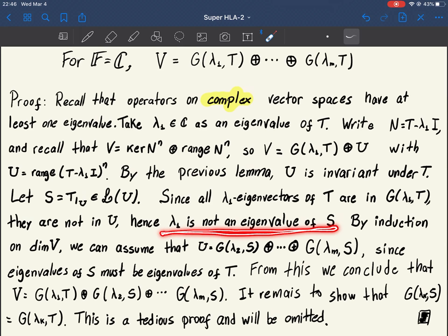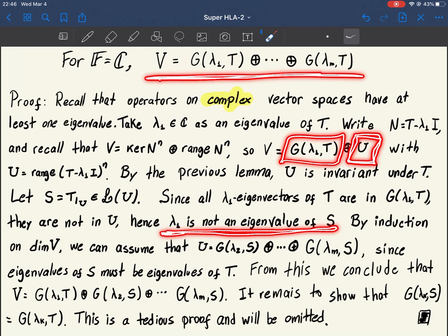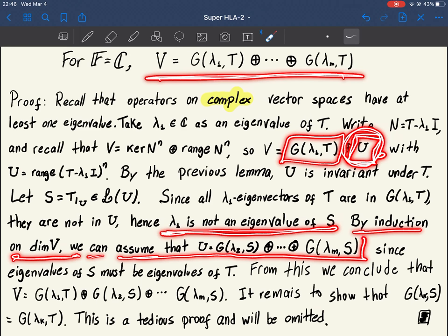And since λ₁ is an eigenvalue, the dimension of this space is at least one, which means the dimension of this subspace is at most n minus one. So we can do an argument by induction on the dimension. And this is what we are trying to show. We can assume this holds for spaces of smaller dimensions. So by induction on dimension of V, we can assume that the theorem actually holds for U, because U is an operator on a space which is also complex but has smaller dimension.